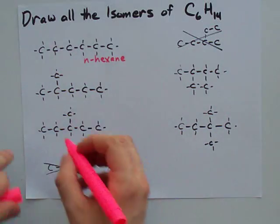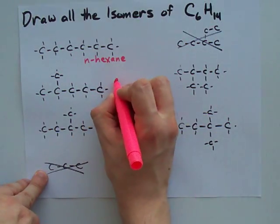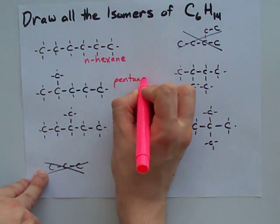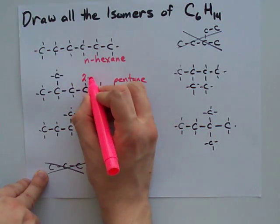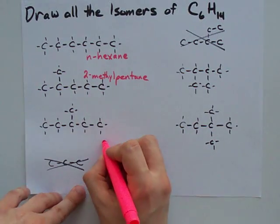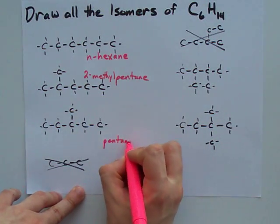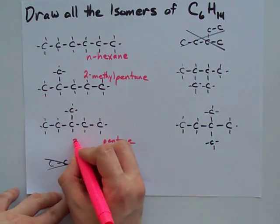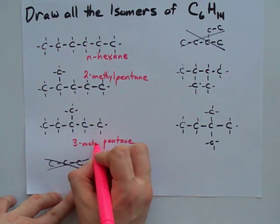This is a pentane, because it's 5 carbons long, but there's a methyl group sticking out of the 2nd carbon, which means it's 2-methylpentane. Similarly, this is a pentane, but it has a methyl sticking out of the 3rd one. That's 3-methylpentane.